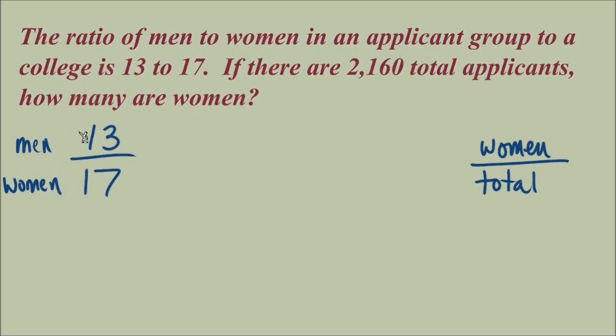What we'll do is go back to our original ratio, this 13 men for every 17 women. Can we take this information and come up with a different ratio that does tell us women to total applicants? What would be our total in this group if we have 13 men and 17 women? Well, 13 plus 17 would give us a total of 30. So I can take this information and decide that we have a total of 30 applicants.